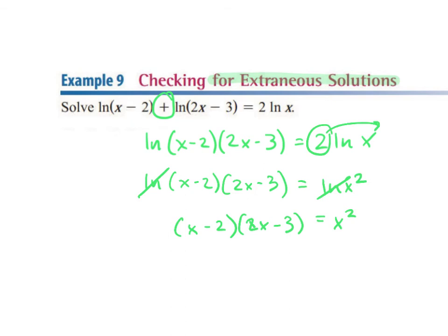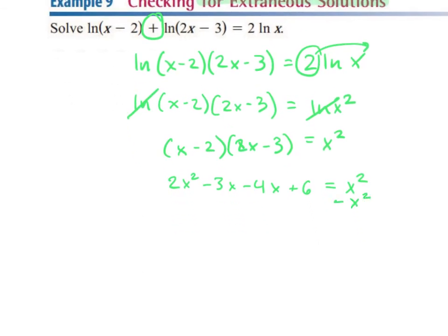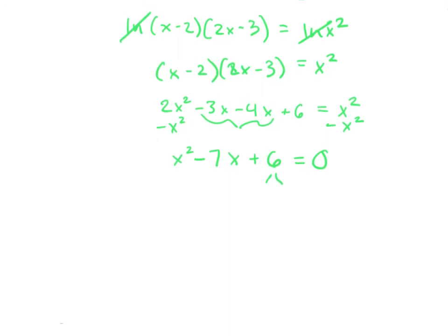Now we solve for x. On the left side we FOIL: x times 2x is 2x squared, x times negative 3 is negative 3x, negative 2 times 2x is negative 4x, and negative 2 times negative 3 is positive 6. We subtract x squared from both sides. Combining like terms gives us x squared minus 7x plus 6 equals 0. We factor by finding two factors of 6 that add to negative 7: negative 1 and negative 6. So (x-1)(x-6) equals 0, giving x equals 1 and x equals 6.